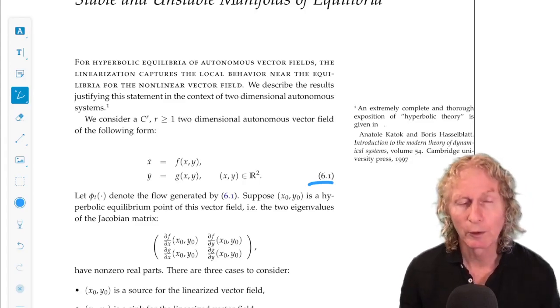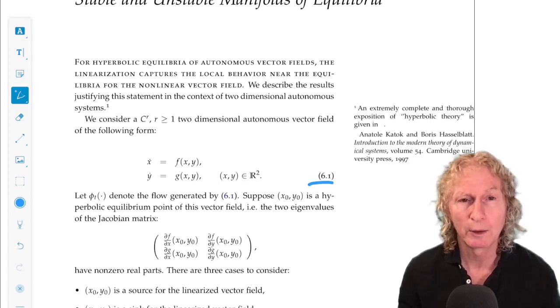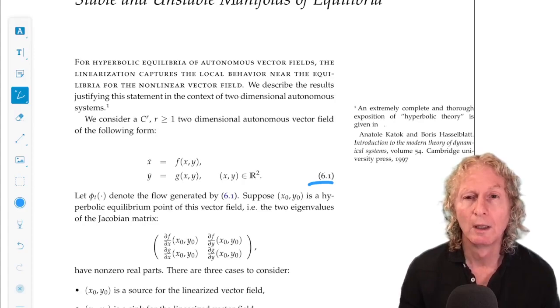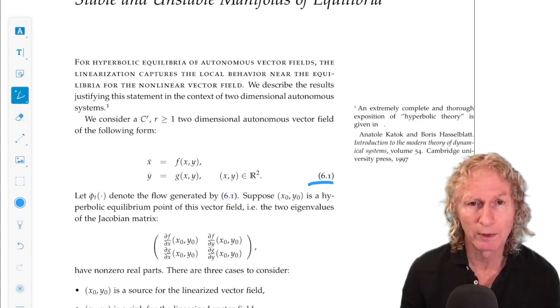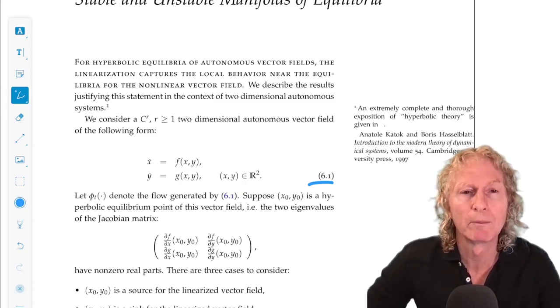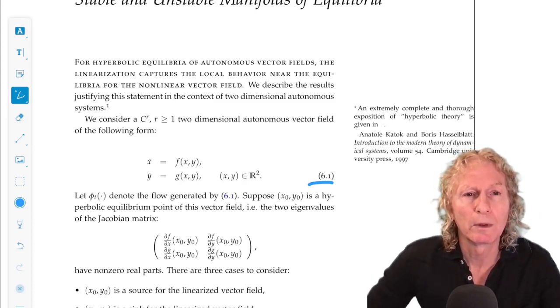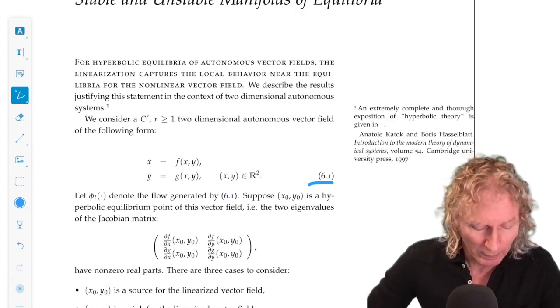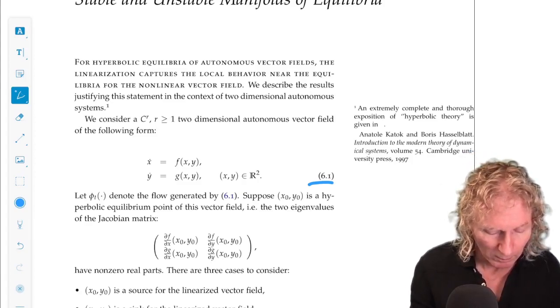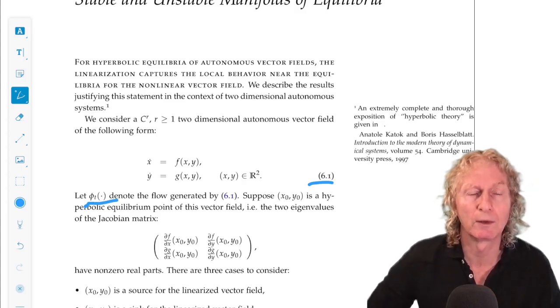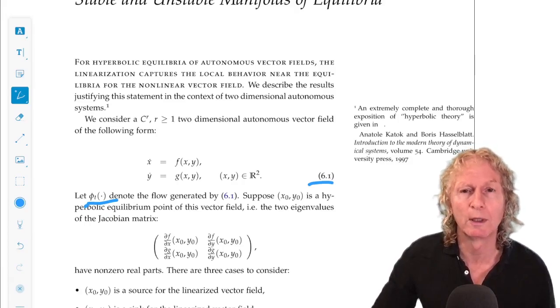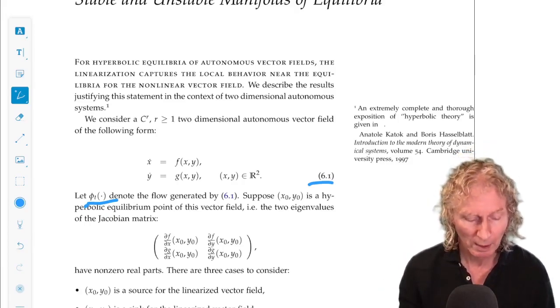So, the vector field is x dot equals f of x and y, y dot equals g of x and y. We assume it's C^r, r greater than or equal to 1, so we can differentiate it and the derivative is continuous. We have to do that if we're going to compute Jacobians and look at hyperbolicity. And we're going to denote the flow generated by this vector field in the usual way, phi sub t in parentheses with a placeholder inside for the initial condition, the point in phase space for which we want to look at the trajectory through that point.